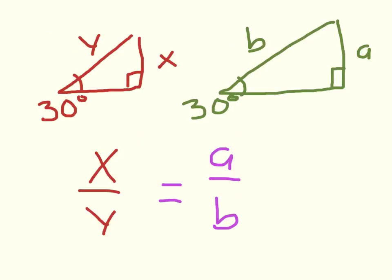If we have a bigger triangle — the green one is bigger than the red one — and they're both 30-degree angles, that's how we know something is similar. One way is that the sides are the same ratio, same proportion, same enlargement. The other is that if all the angles are the same, it's a similar triangle. So the ratio X over Y would equal the ratio A over B. Those ratios will be the same if we have similar triangles.